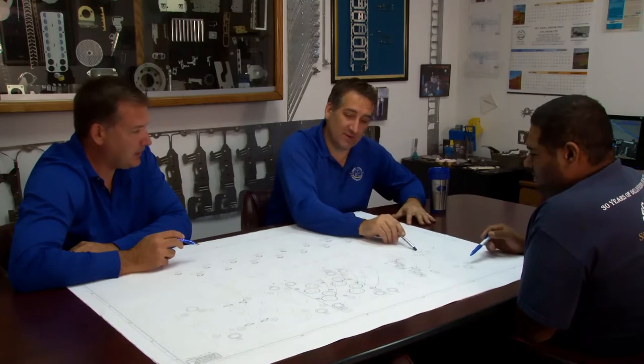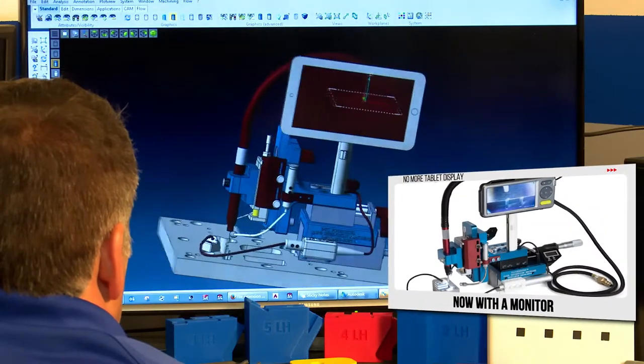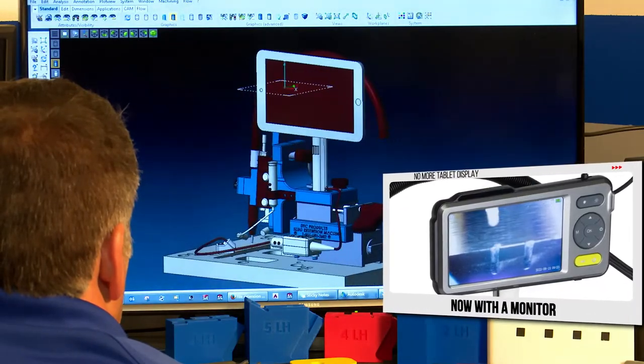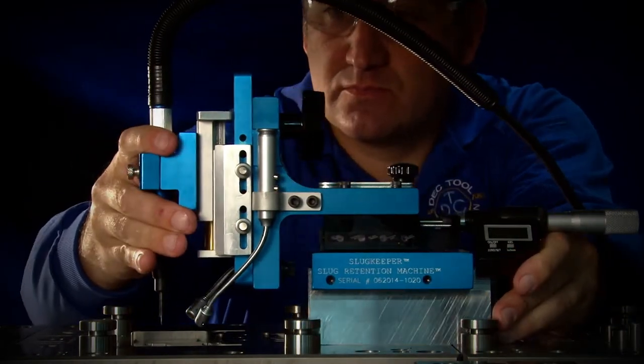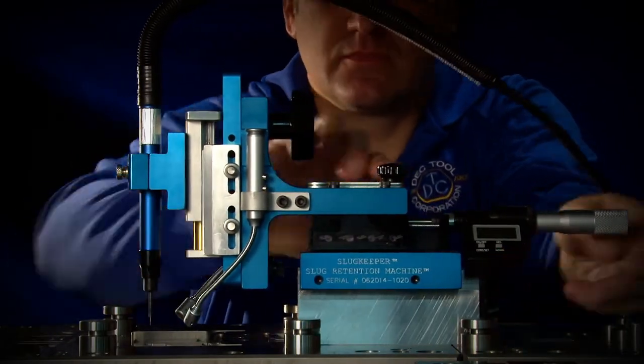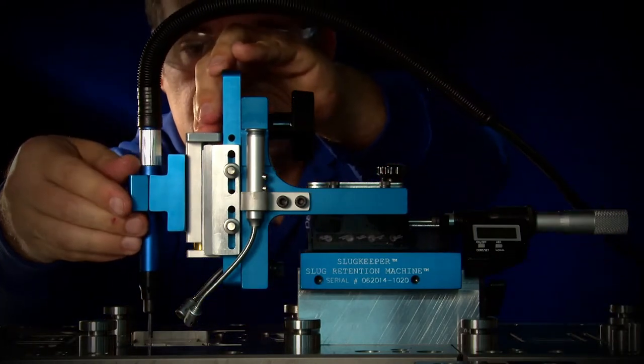Fortunately, there's now a simple way to avoid these costly setbacks. DTC Products now offers a quick and effective solution for the expensive problem of slug pulling. The slug retention portable machine. Now you can bring the patented slug retention machine to your own work site to address the problems caused by pulled slugs.